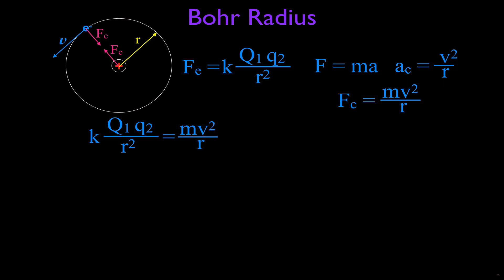We can cancel an R from both sides, and then we're left with K E squared divided by R equals MV squared. Here Q1 and Q2 are both replaced by E, the elemental charge, because both the proton and the electron have the same magnitude of charge: 1.6 times 10 to the minus 19 Coulombs. So instead of Q1 and Q2, we use E squared, giving us K E squared divided by R equals M times V squared.